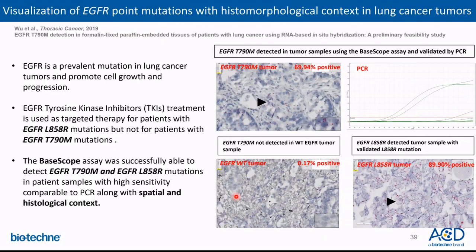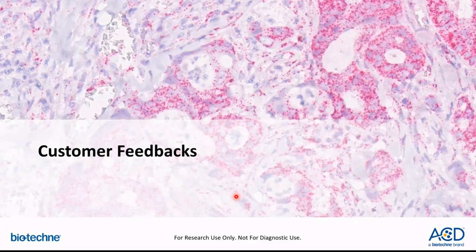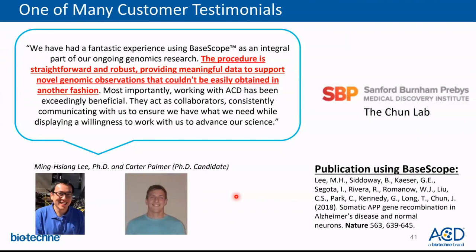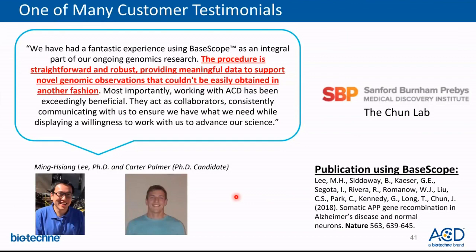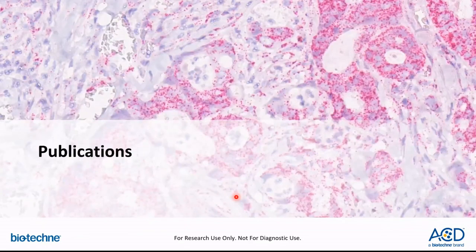Now that you've learned how to apply BASCOPE to your study, many BASCOPE customers who have used our assay love it because it's the only technology that can specifically detect splice variants, short targets, and point mutations at single-cell resolution while also providing spatial and morphological information in vivo. One of our customers from the Chung lab at SPP is an avid user of BASCOPE. Their feedback is that the assay procedure is very straightforward and robust, providing meaningful data that supports novel genomic observations that no other methods can achieve. The Chung lab has also published BASCOPE data in Nature.